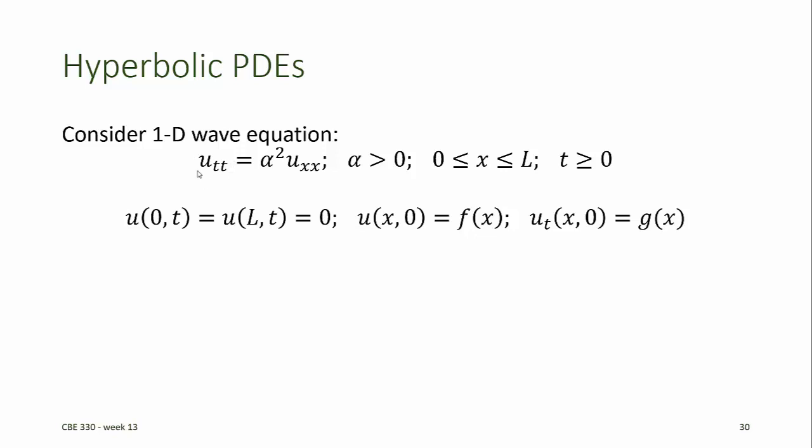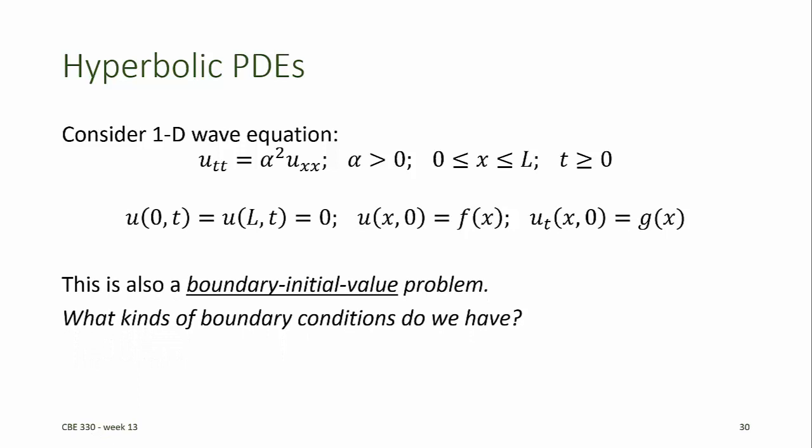In this case, we'll require two initial conditions in the t dimension. So while we have boundary conditions for x, we have initial conditions for the dependent variable at time equals zero, and the partial derivative of the dependent variable with respect to time at t equals zero. Therefore, this is also a boundary initial value problem. The way we've defined it here, the boundary conditions in the x dimension are Dirichlet conditions, and the initial conditions in the t dimension are a Dirichlet condition and a Neumann condition.